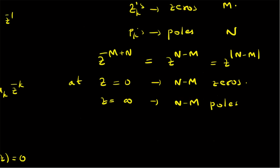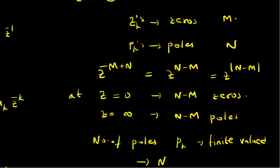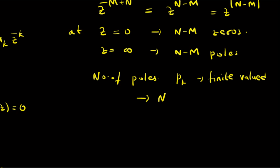Basically, the number of poles for which the Pk's are finite valued is n. The finite valued locations of poles and the finite valued locations of zeros — that is, the Zk values plus zeros at Z equal to zero — total to n as well, so these two are equal. We are not counting the value at Z equal to infinity, which also gives poles, but they are not included. So only the finite valued locations are actually equal.